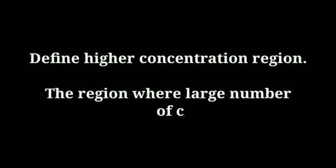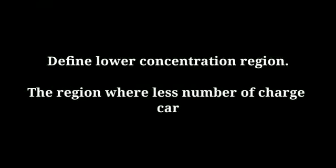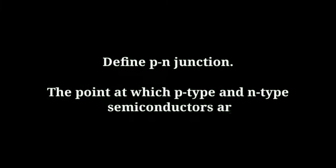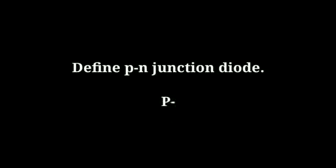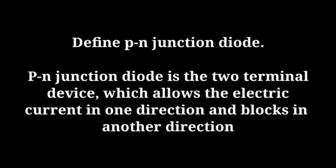Define higher concentration region: the region where a large number of charge carriers is present is called the higher concentration region. Define lower concentration region: the region where a less number of charge carriers is present is called the lower concentration region. Define PN junction: the point at which p-type and n-type semiconductors are joined is called a PN junction.